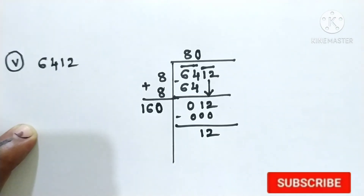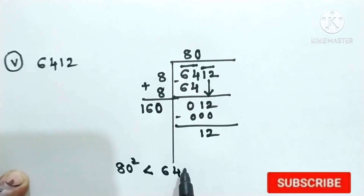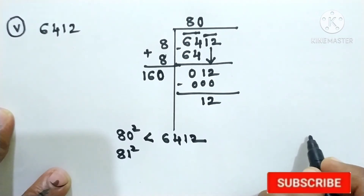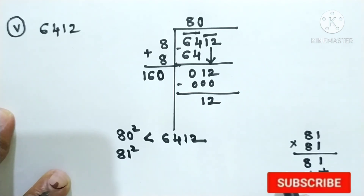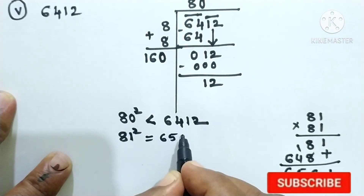So 80 squared is less than 6412. After 80, the next perfect square number is 81 squared. Multiply 81 into 81: 1 into 1 is 1, 1 into 8 is 8, 8 into 1 is 8, 8 into 8 is 64. Adding: 8 plus 8 is 16, 4 plus 1 is 5, giving 6561.